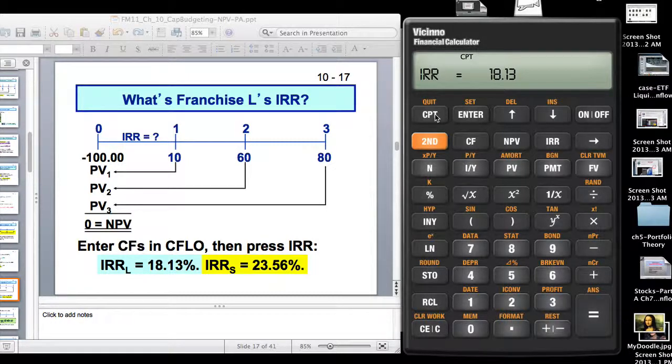The three capital budgeting techniques: the payback method is time, how much time it takes to get your investment back. NPV is a dollar amount, and IRR is your percentage amount. So, here it is, 18.13. Nice homework to do would be to cross-check all of this work and make sure that you get IRR as 23.56.